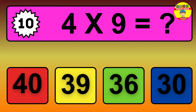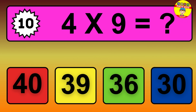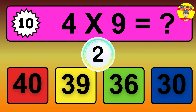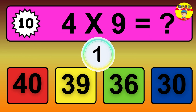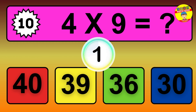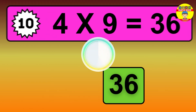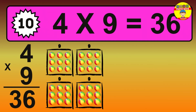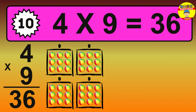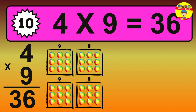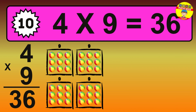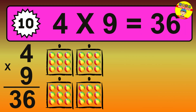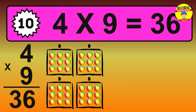Question 10. 4 times 9 equals what? The answer is 4 times 9 is 36. To calculate, we have 4 groups with 9 balls each. So how many balls do we have? 36 balls.